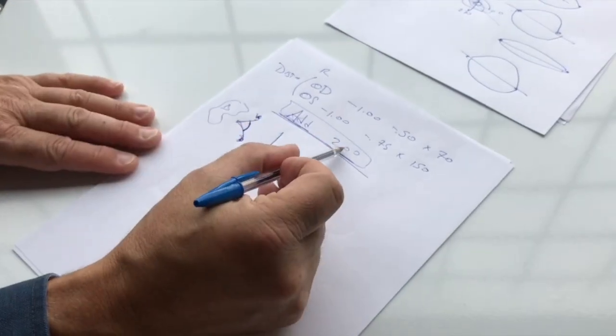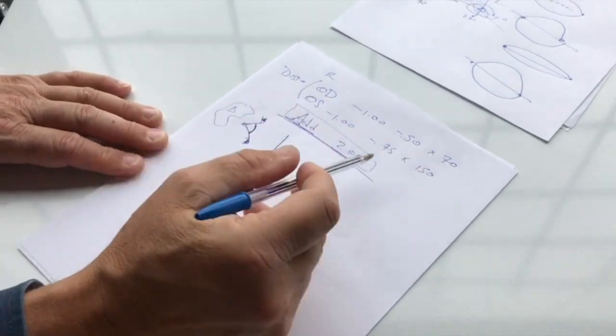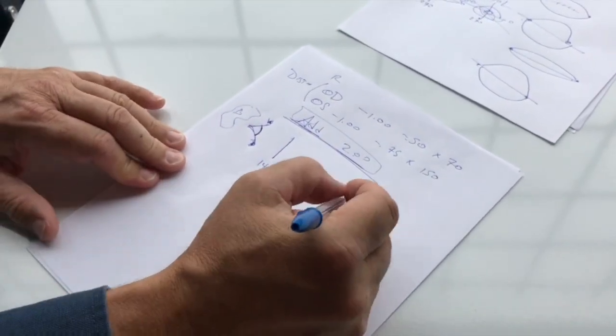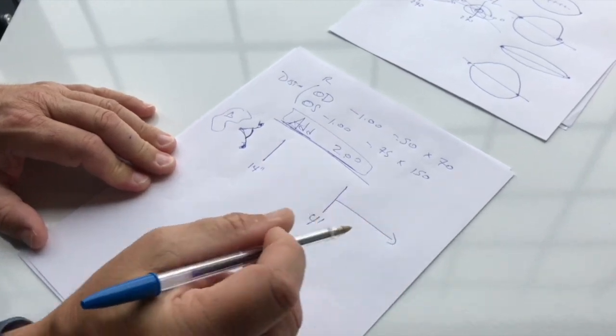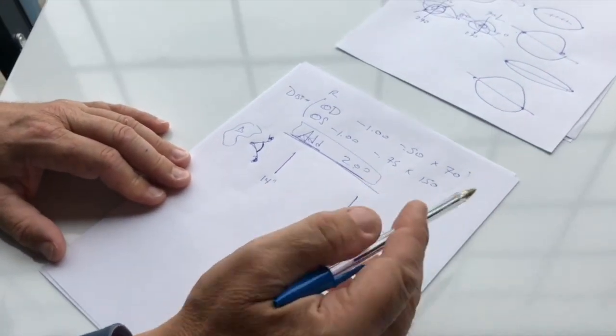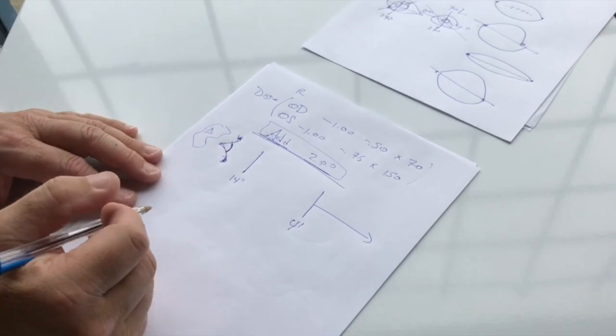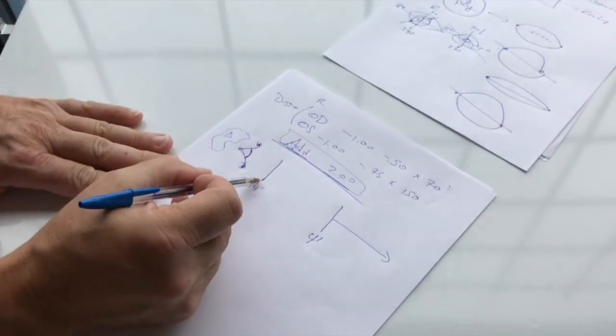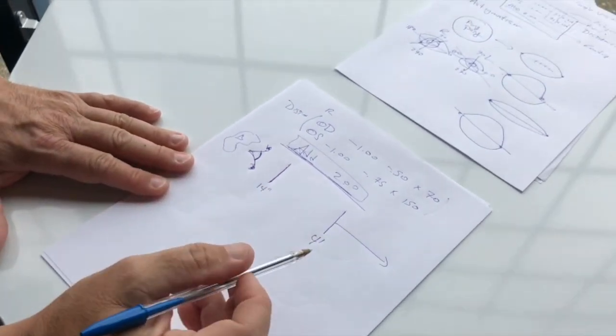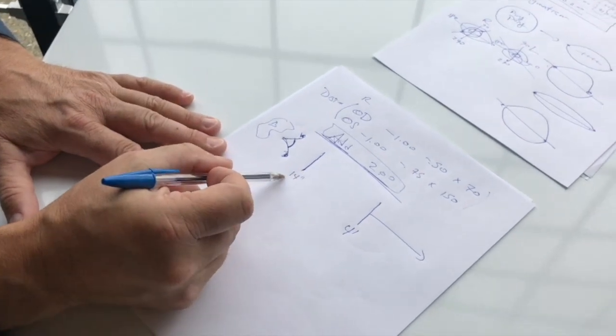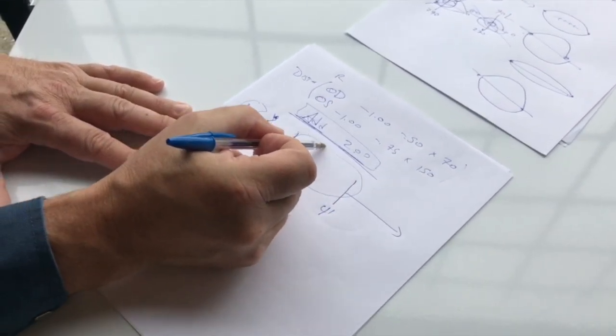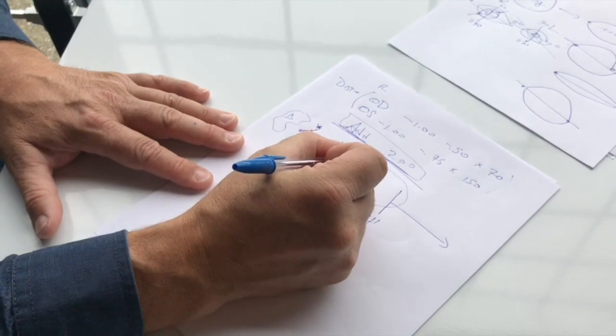So, when we set that, the best reading that they're going to have with this prescription is 14 inches from their eye. And distance takes place at 4 feet and greater. So, whenever you see an add power, it means that there's a spot for reading and a spot for distance. And you can see the space between 14 inches and 4 feet, it's called the intermediate area.